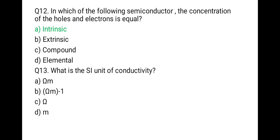Question 13: What is the SI unit of conductivity? Conductivity is the reciprocal of resistivity. The unit of resistivity is ohm, so its reciprocal is the inverse of ohm. The unit of conductivity is mho. The correct answer is B — reciprocal of ohm, or mho.